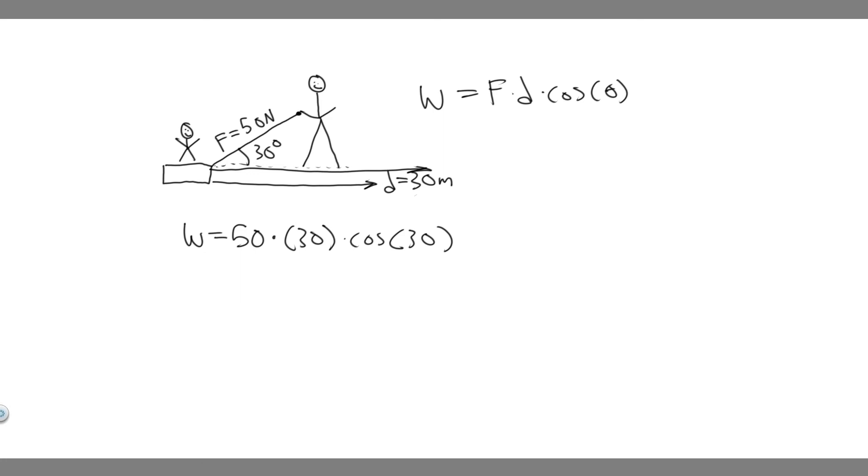All we have to do is go ahead and plug in. The work is going to be equal to 50 times 30 times the cosine of 30. Make sure when you do this you're in degrees. When you do this, you're going to get 1299.038, so you can round however you want.